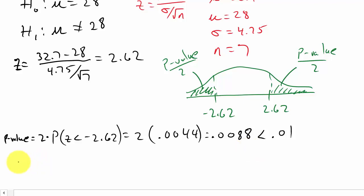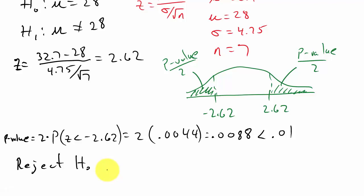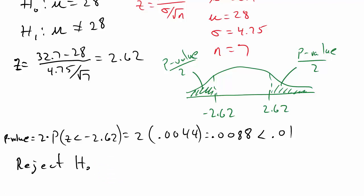Since our P-value of 0.0088 is less than our significance level of alpha equals 0.01, we reject H naught — the null hypothesis. Our conclusion is that Roger's average red blood cell volume appears to be different from the average for healthy adults.